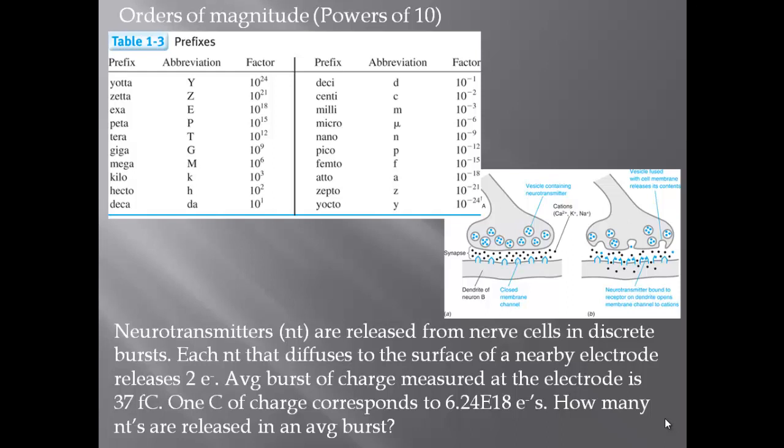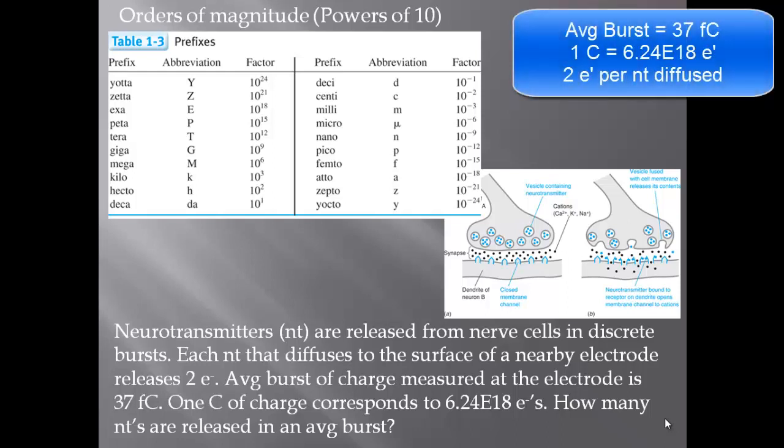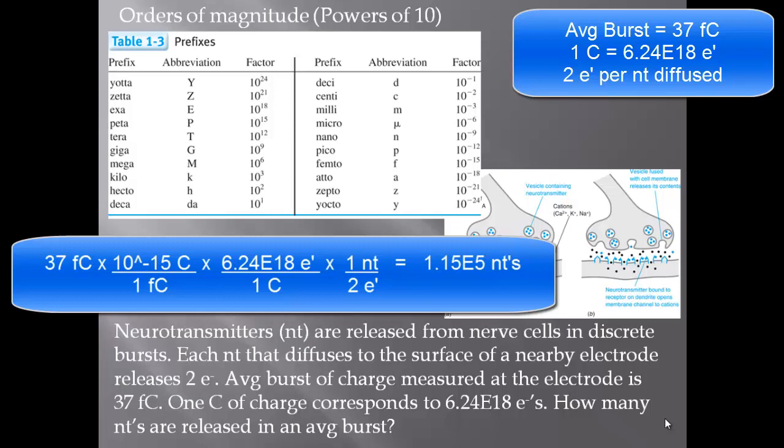You start with 37 femtocoulombs, because knowing the coulombs in an average burst lets you convert to neurotransmitters. Write 37 femtocoulombs, then convert: 1 femtocoulomb = 10⁻¹⁵ coulombs — the power of 10 always goes with the base unit, so 10⁻¹⁵ goes with coulombs and 1 goes with femtocoulombs. Then use 1 coulomb = 6.24 × 10¹⁸ electrons, and since each neurotransmitter releases 2 electrons, for every 2 electrons one neurotransmitter is released.